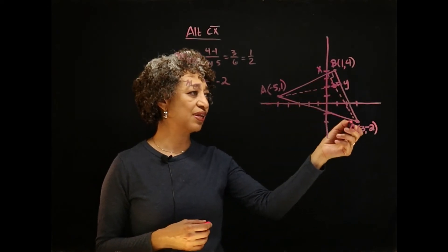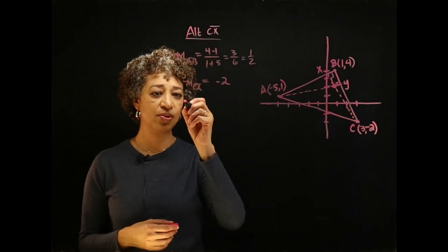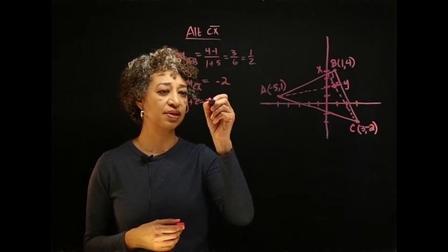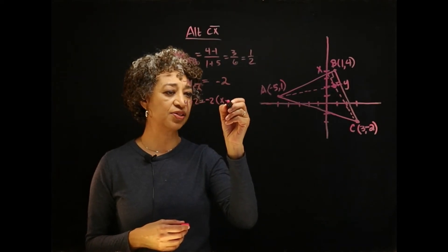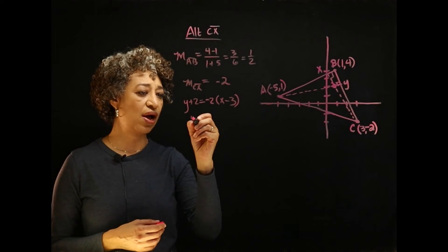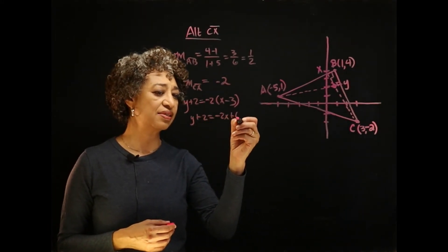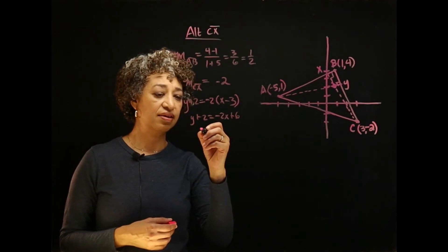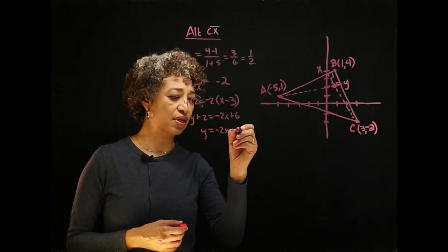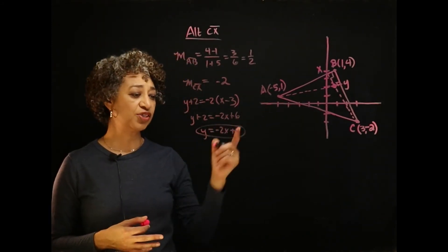Then I need the equation of the line that contains altitude CX. So I'm going to use point-slope form. y plus 2 is equal to my slope times x minus 3. And simplifying that, I have y plus 2 is equal to negative 2x plus 6 and y is equal to negative 2x plus 4. So this is the equation of altitude CX.